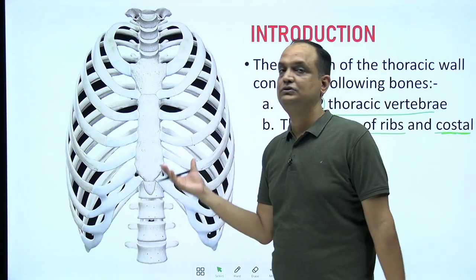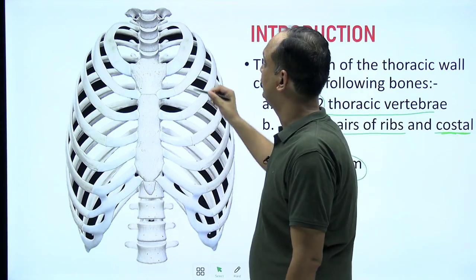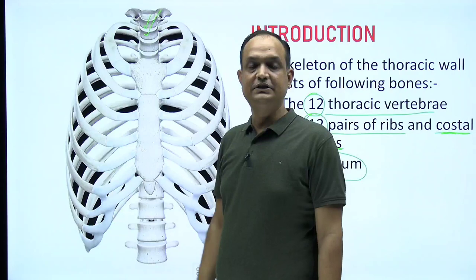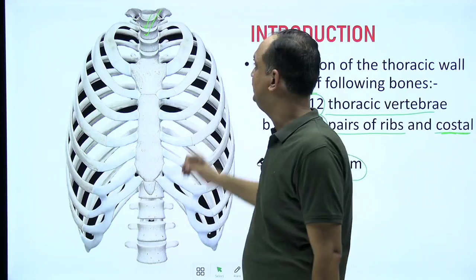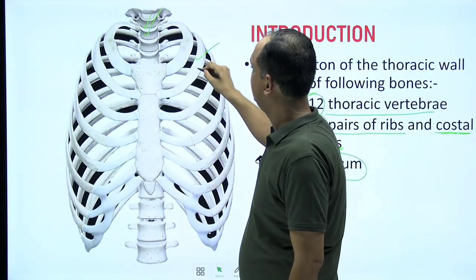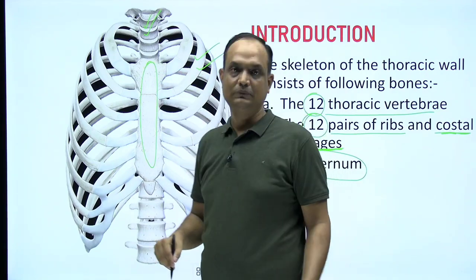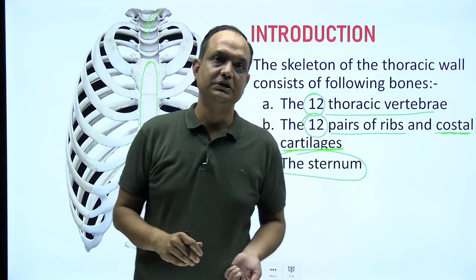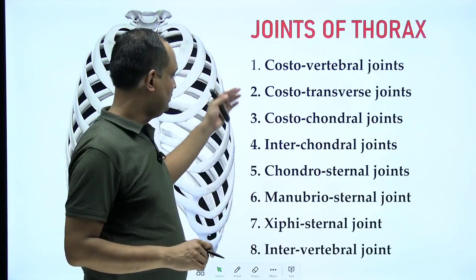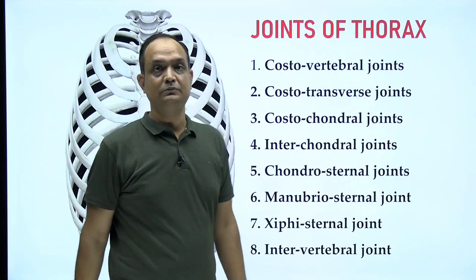When we look at the joints of the thorax, we are talking about the joints formed by the vertebrae posteriorly, the ribcage on the sides, and the sternum anteriorly. There is a long list of joints formed by these three sets of bones.